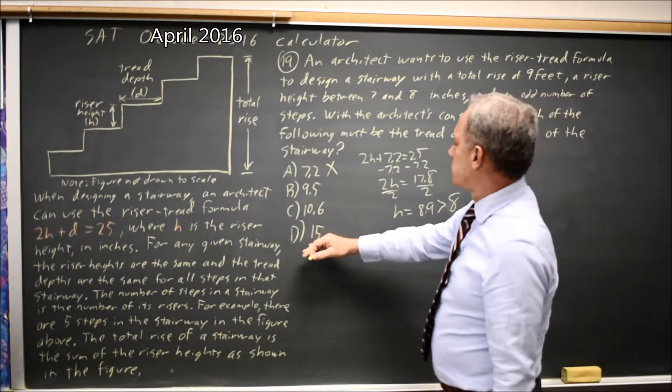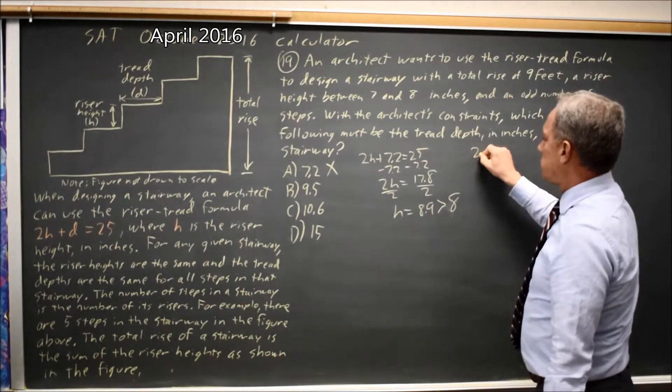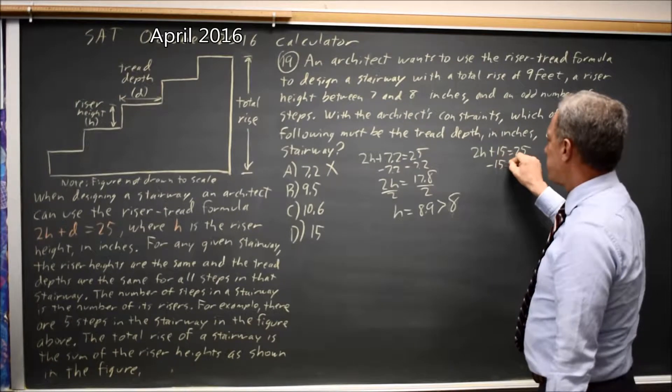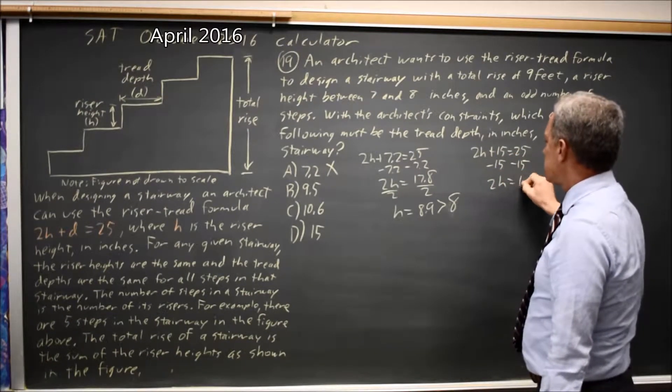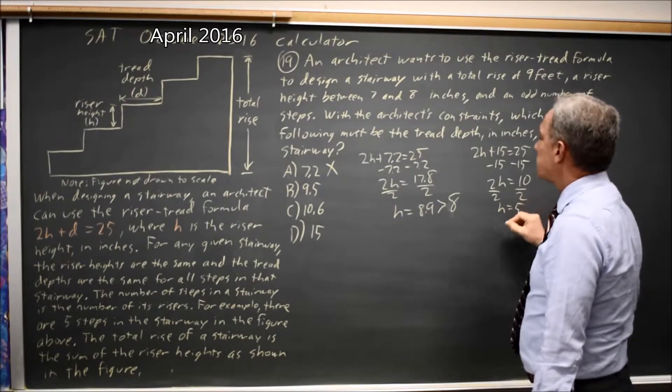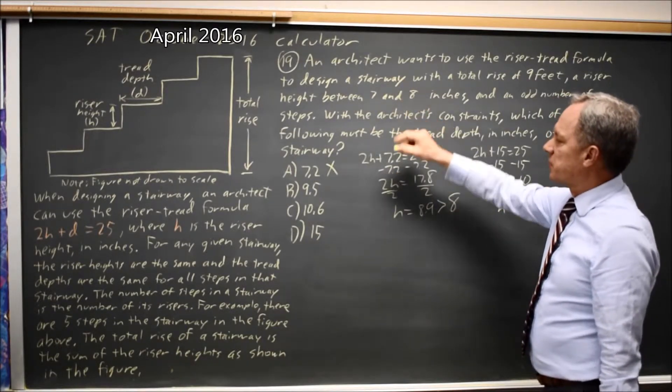Let's try the largest choice also. 2H plus 15 equals 25. Subtract 15 from both sides to get 2H by itself. 2H equals 10. If I divide by 2, I get H equals 5, which is also not between 7 and 8.